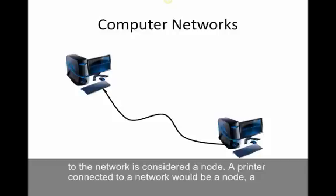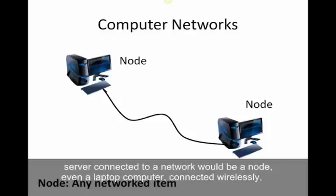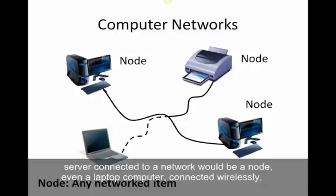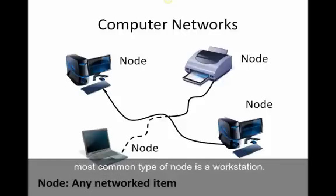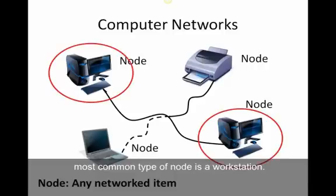Any device attached to the network is considered a node. A printer connected to a network would be a node, a server would be considered a node, and even a laptop computer would be considered a node even though it's connected wirelessly. Note that it isn't necessary to connect to the internet when setting up a network. The most common type of node is a workstation — a desktop style computer.